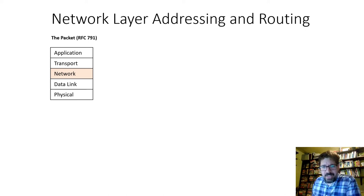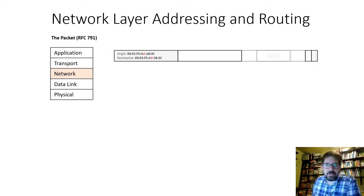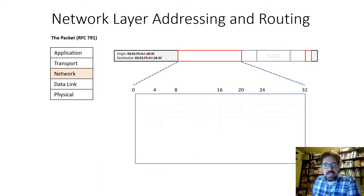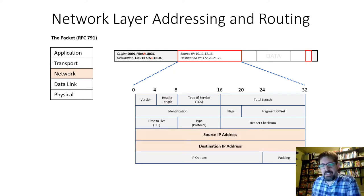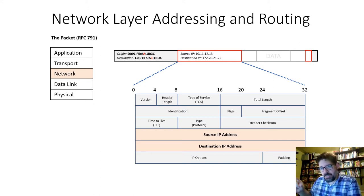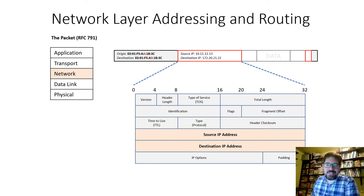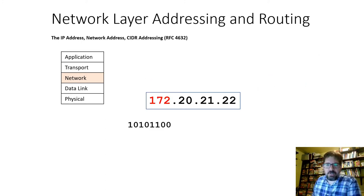Moving up to the network layer, things get a bit more complicated. Encapsulated inside that frame, we find a packet header containing — most importantly — the source IP address and the destination IP address. That's the network address. IP addresses look more complicated than MAC addresses. They're called octets, made up of 8 bits each, and when strung together you have an IP address — again, nothing more than ones and zeros.